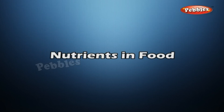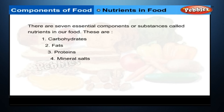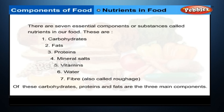Nutrients in Food: There are seven essential components or substances called nutrients in our food. These are carbohydrates, fats, proteins, mineral salts, vitamins, water and fibre, also called roughage. Of these, carbohydrates, proteins and fats are the three main components.